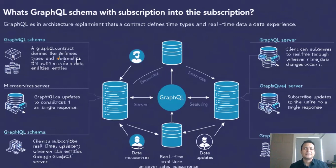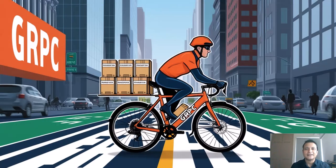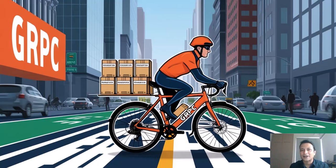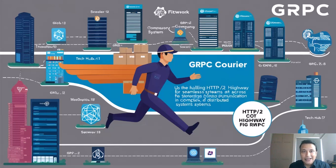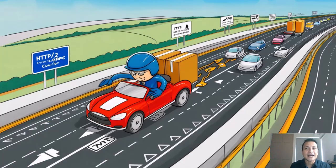Now let's move to gRPC, or Google RPC — the speedy courier. This is all about efficiency and speed. gRPC uses a special lightweight format called Protocol Buffers, which makes it faster than the rest. Because it runs on the HTTP/2 highway, it can carry multiple packages at once without slowing down.